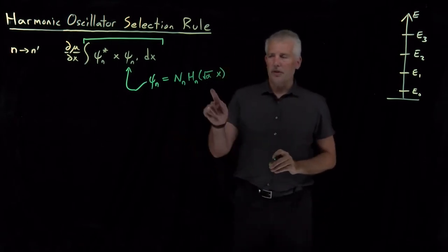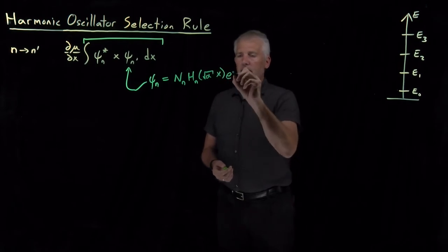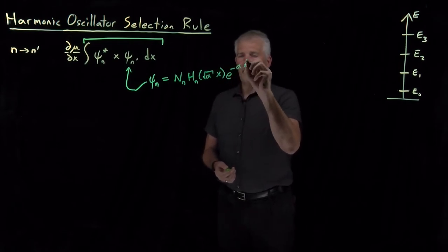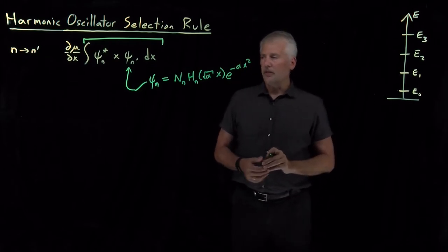It's actually a function of the square root of some constants we call alpha multiplying x, and then e to the minus alpha x squared. Those constants appear up in the exponent of the Gaussian as well. So that's the form of these wave functions.